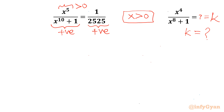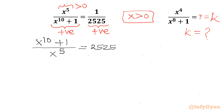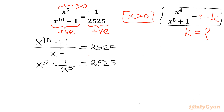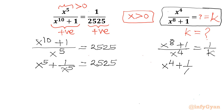Now I will consider flipping the LHS and RHS. I can swap numerator and denominator: (x¹⁰ + 1) / x⁵ = 2525. Since x is nonzero, I can divide to get x⁵ + 1/x⁵ = 2525. And from our expression, taking the reciprocal: (x⁸ + 1) / x⁴ = 1/k, which after dividing by x⁴ gives x⁴ + 1/x⁴ = 1/k.